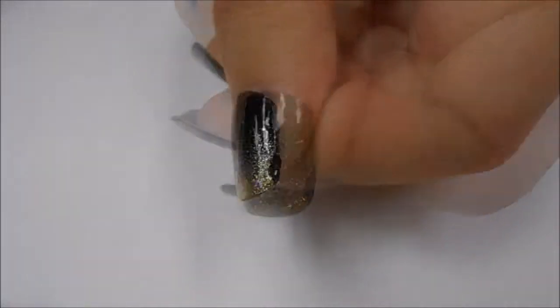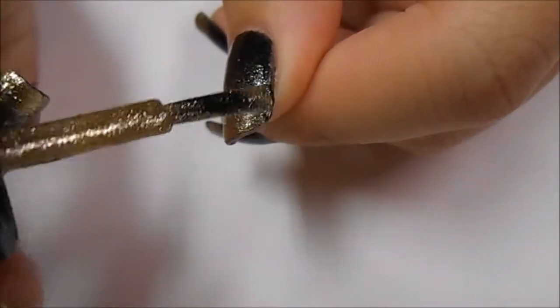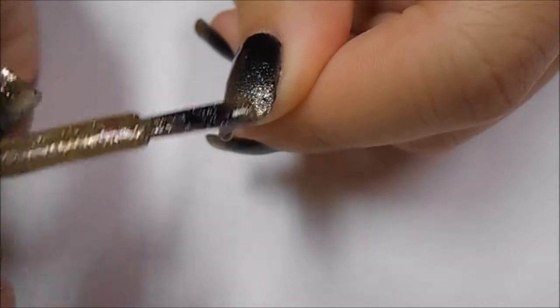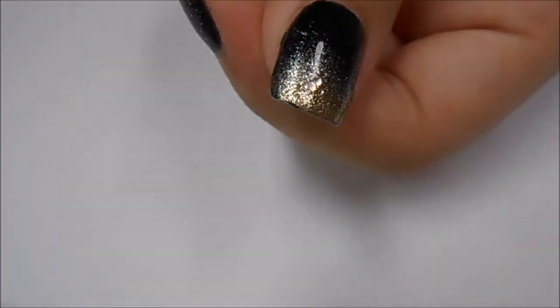So after that's completely dried, I'm taking a gold polish. I'm going to blend it into the gradient. If the nail design that you're refreshing isn't a gradient, you can always just add another layer of your base coat.